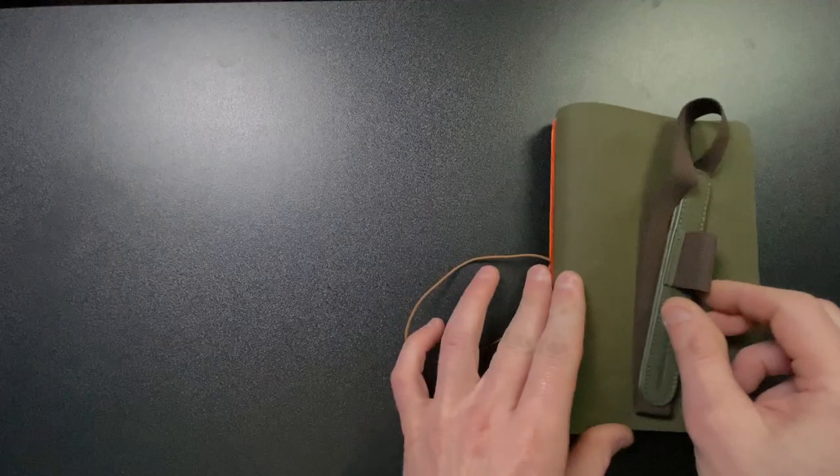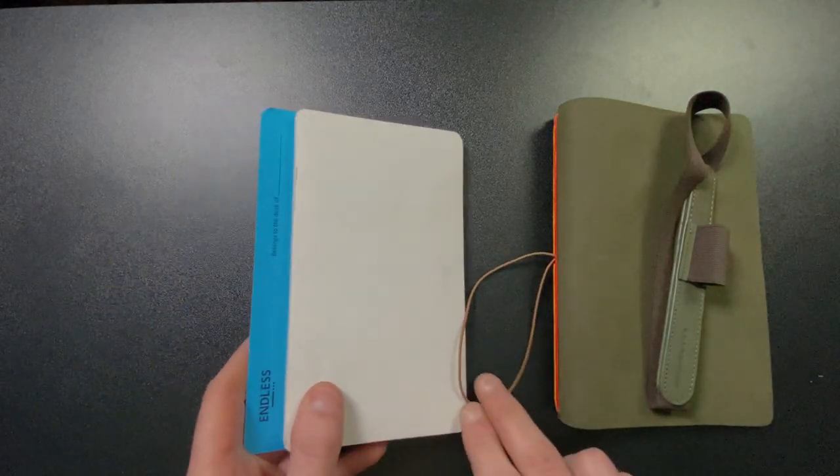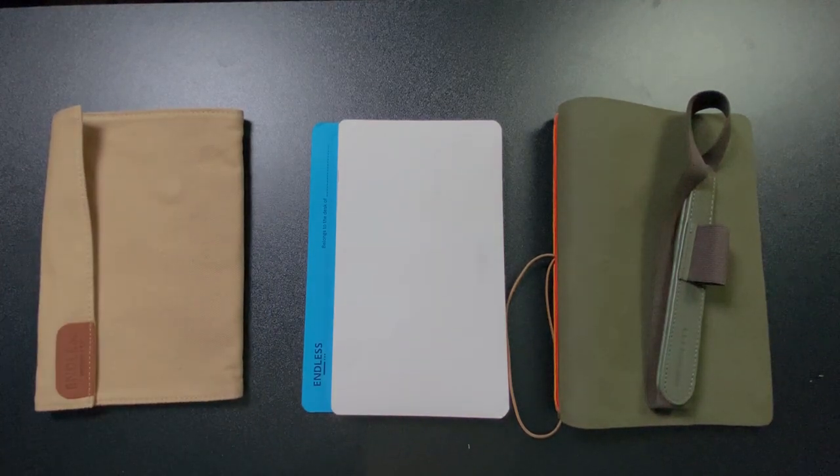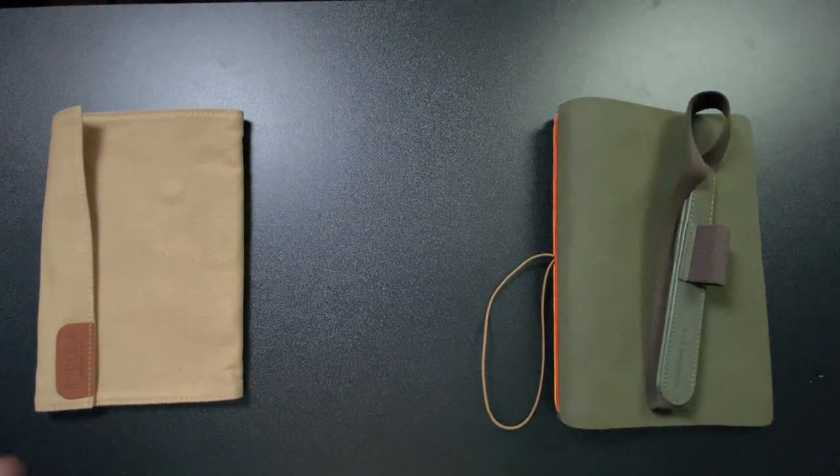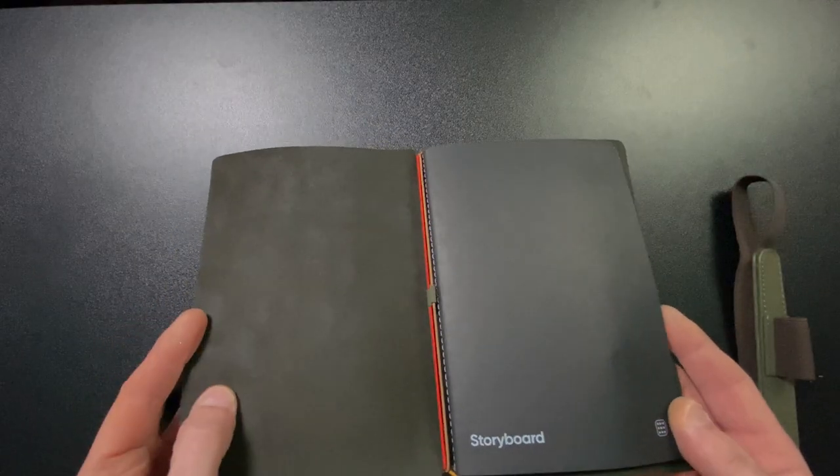But the main products that I've been using for the past few weeks have been the Endless Explorer notebook with the pen loop, the Creative Block Tear Off Pad, and the Cotton Wallet. So let's take these piece by piece. The Explorer notebook is a journal system very similar to a Midori. We've seen a lot of these recently, ever since the Midori became so popular. But it's basically a leather sleeve in which you can place inserts.